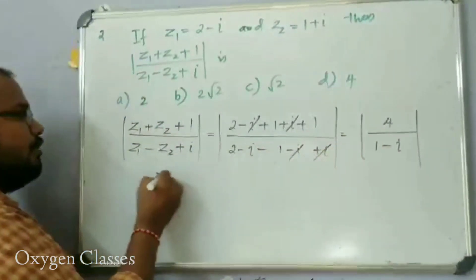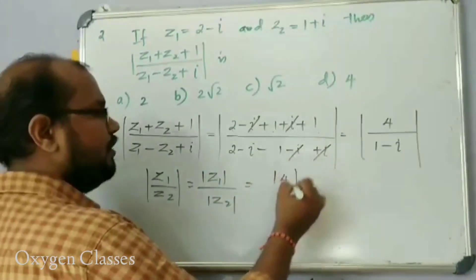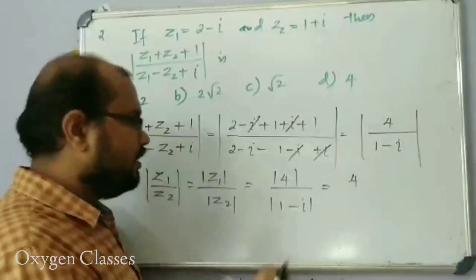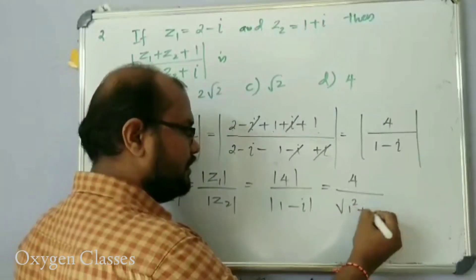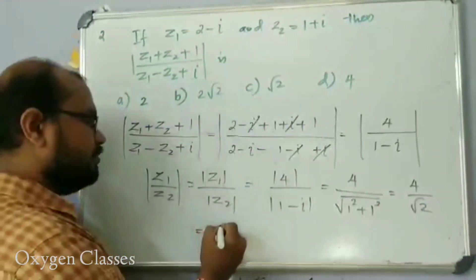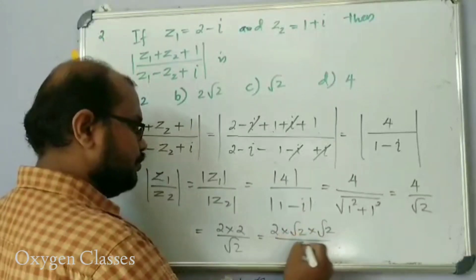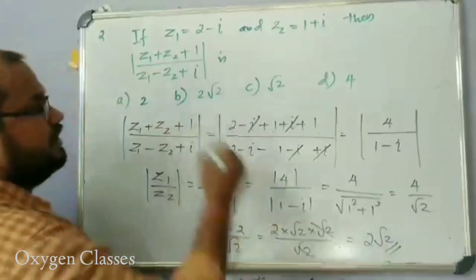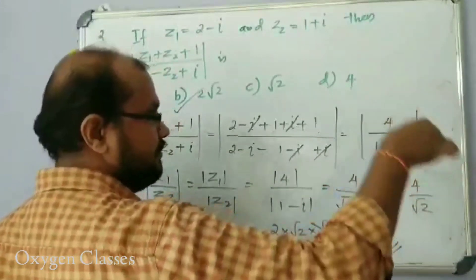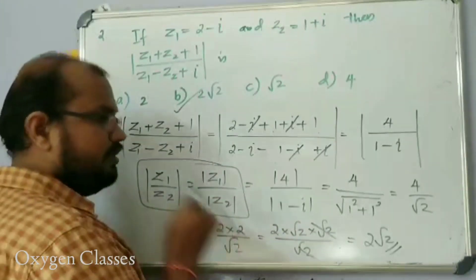Using the modulus property, mod(z1/z2) = mod(z1)/mod(z2). So we get mod(4) divided by mod(1 minus i), which equals 4 divided by root(1 squared plus 1 squared) = 4 divided by root 2. Simplifying: 4 by root 2 equals 2 root 2. That is the answer.